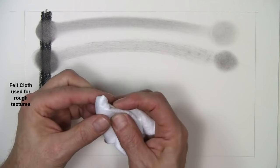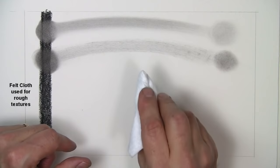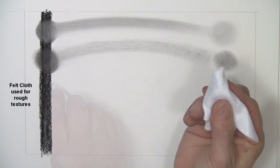If you push too hard on any of these blenders, you won't be able to manipulate the texture they make afterwards. If you're going to try this at home, I want you to use a very light touch while you're doing this. This piece of felt is what I use to create really nice rough textures.